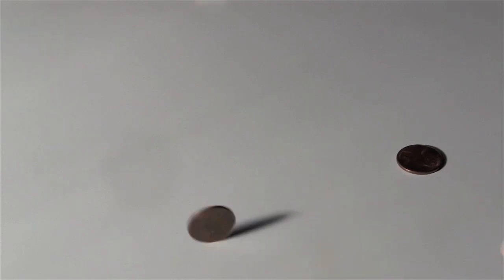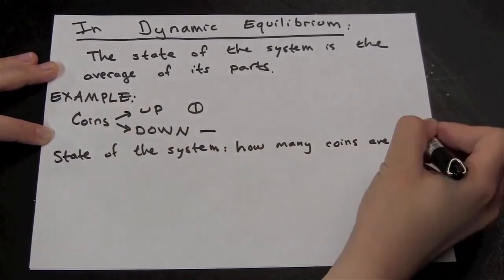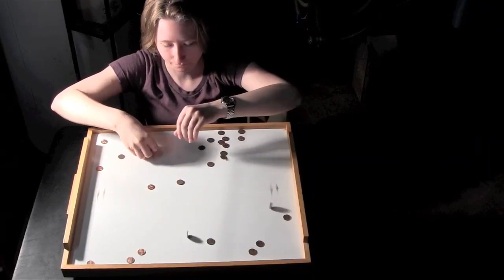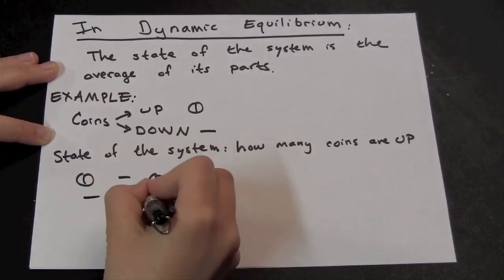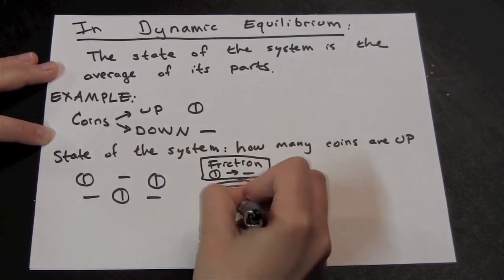For example, an individual coin can either be up and spinning, or down. The state of the system is how many coins are up. I can spin coins so that three coins are spinning at once. As soon as I spin up another one, friction knocks down one of the ones that was already spinning.